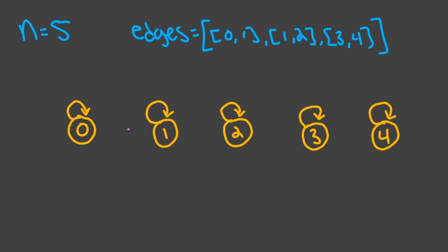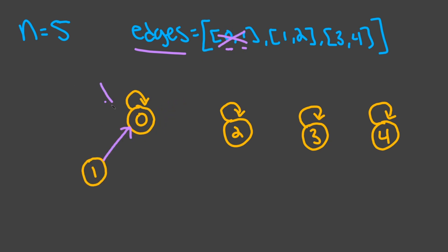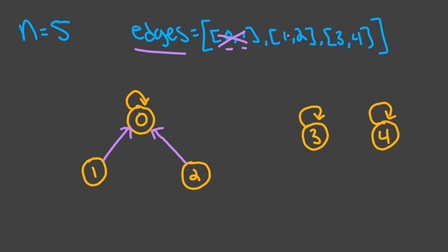Next, we're going to update the edges between the nodes according to this edges array. Our first pair of edges is going to be zero and one. What we're going to do here is choose a representative node — that is going to be the parent of the whole undirected graph. So let's choose zero as the representative; we want one to be connected to zero and not the other way around. So our connection is going to be like this, and now we're done with this edge. Next, we go to edge one and two. Normally you'd connect two to one, but because zero is the representative node, we connect two to zero instead.